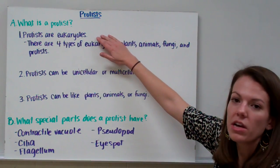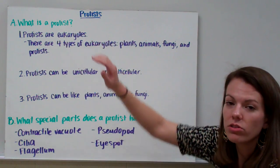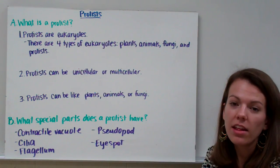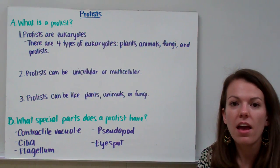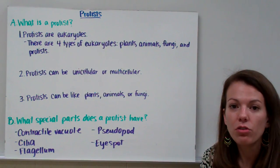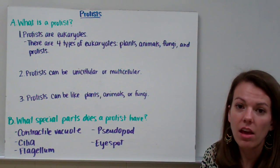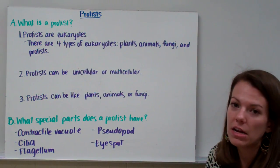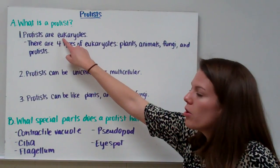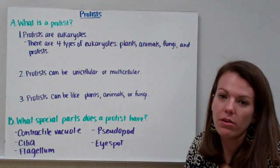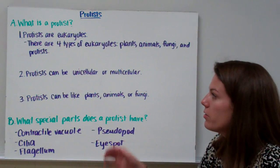Protists are one type of eukaryote. Eukaryotes are the complicated living things on Earth. They have a nucleus, mitochondria, chloroplasts, and any other complicated organelle. Remember, 'U' rhymes with 'do,' so they do have those complicated organelles.